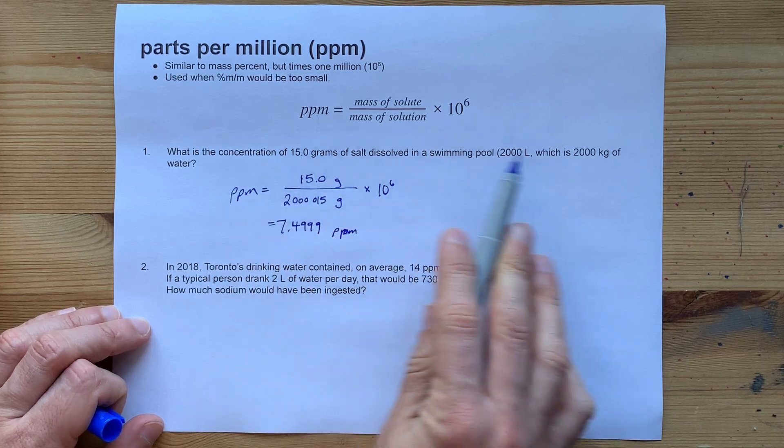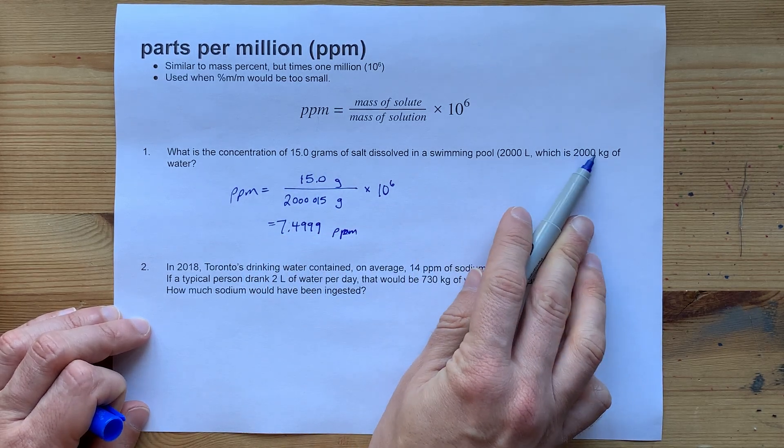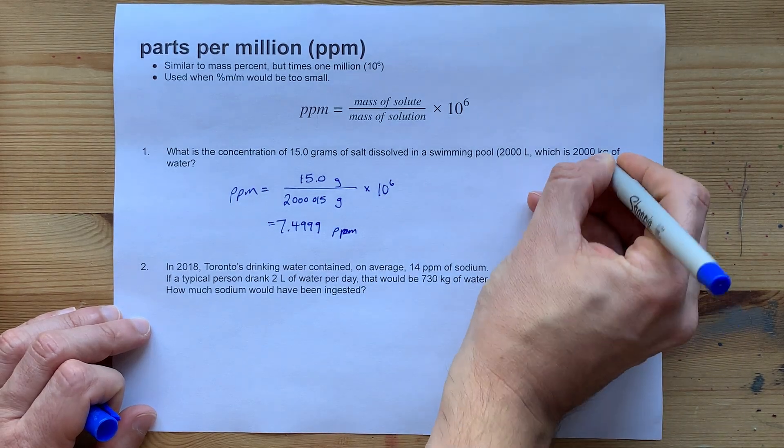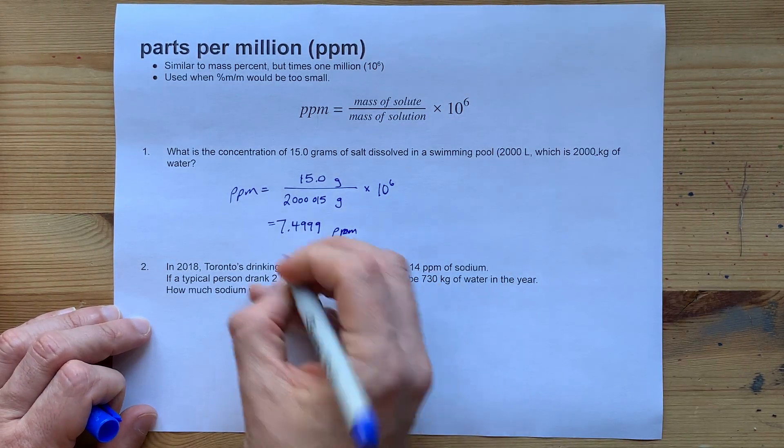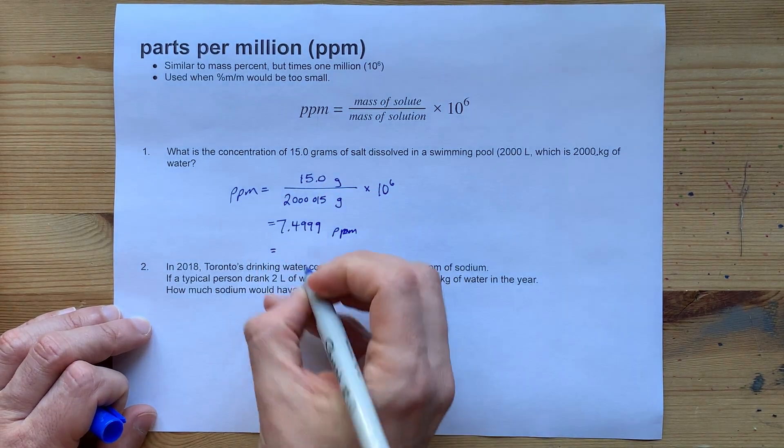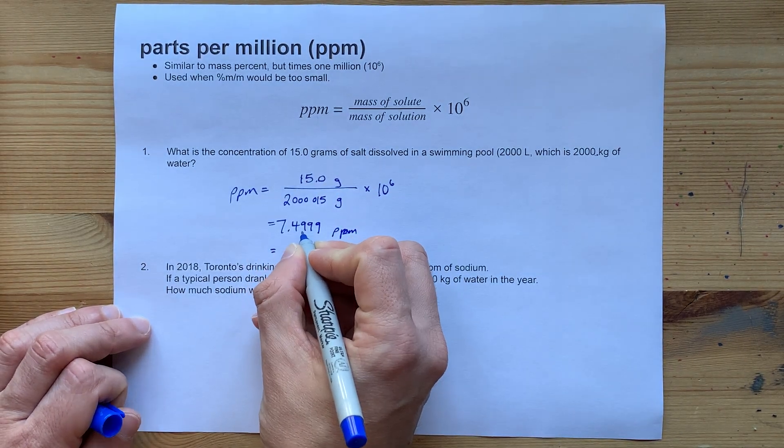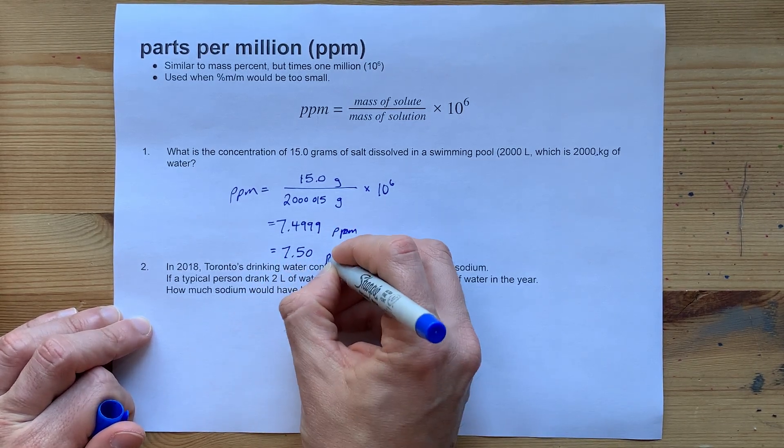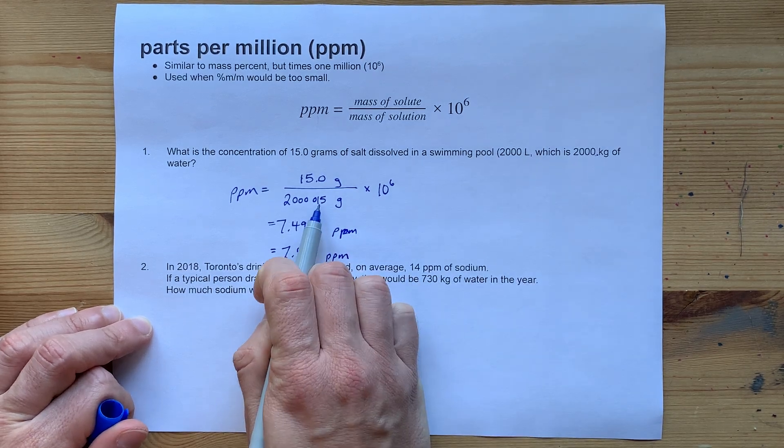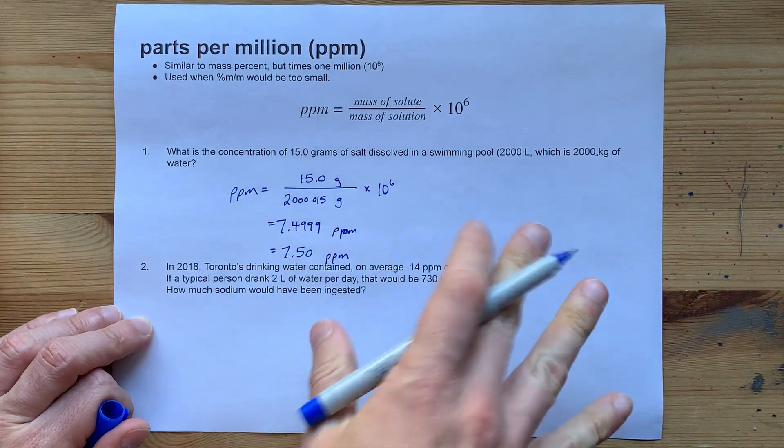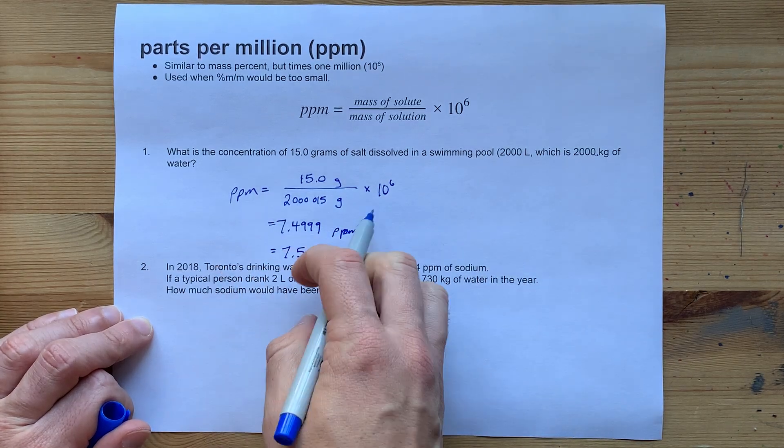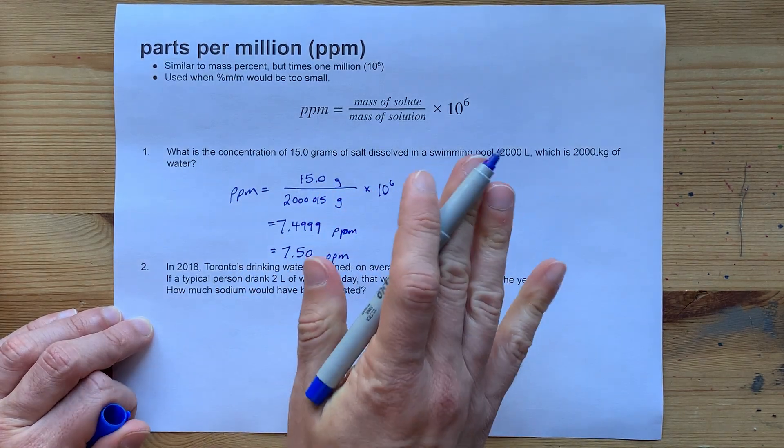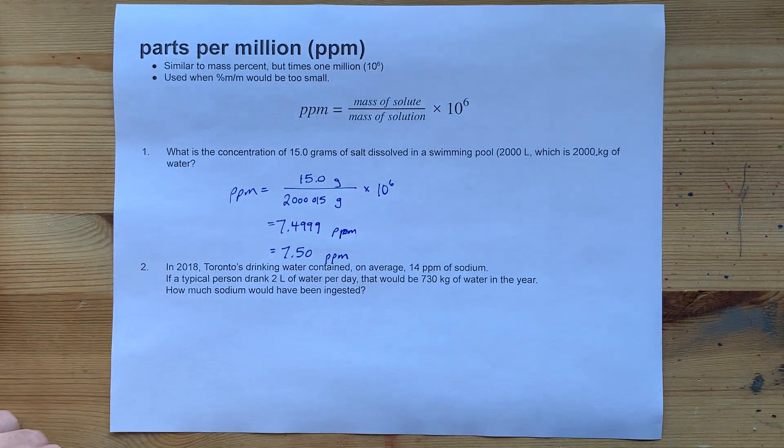this one had 3 significant figures. This one technically only had 1, which is ridiculous, so perhaps I should have put a decimal point there. That's now 4 significant figures. I have to bring this down to 3, so that means the 7 and 4 and the 9 is the last one. And it gets rounded up, so I end up with 7.50 ppm anyways. It turns out that that 15 was almost completely inconsequential compared to the 2 million grams of water.